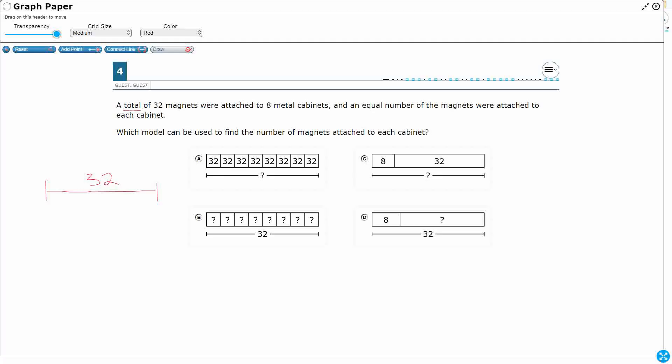So they were attached to 8 metal cabinets. What do we do with that 8? Well, here we go. When we see this equal number, that is a big clue that we're talking about equal groups. And what we're going to find starting in third grade and continuing through the rest of high school and beyond,